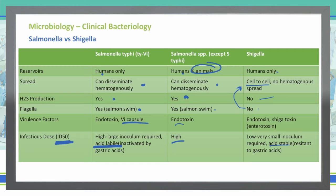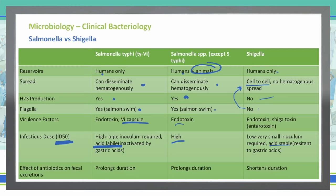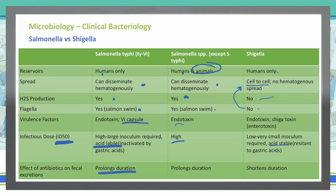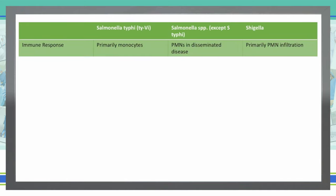If we treat these with antibiotics, what happens to the excretion? With all of the Salmonella species, giving antibiotics will prolong the duration of fecal excretion, whereas with Shigella, it's going to shorten that duration. The immune response for Salmonella typhi is mostly going to be monocytes, whereas the rest of the Salmonella species and Shigella, polymorphonuclear neutrophils are going to be part of the immune response.